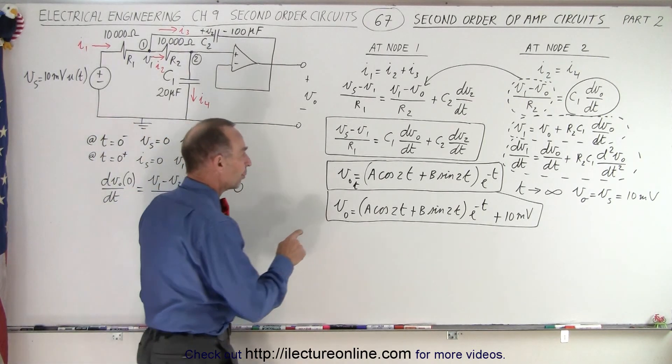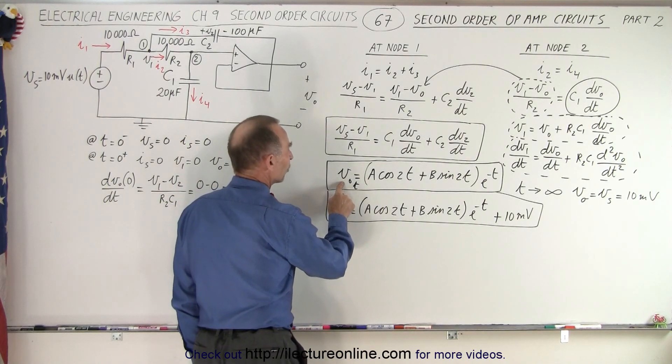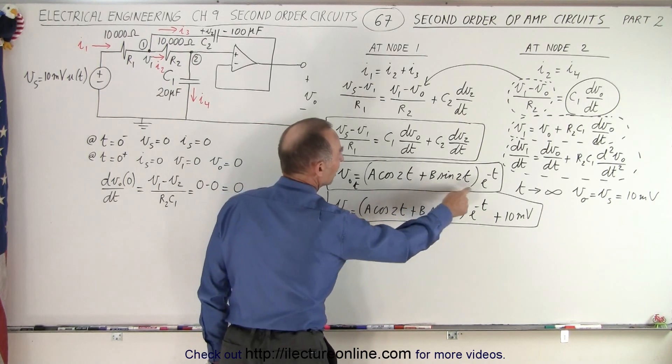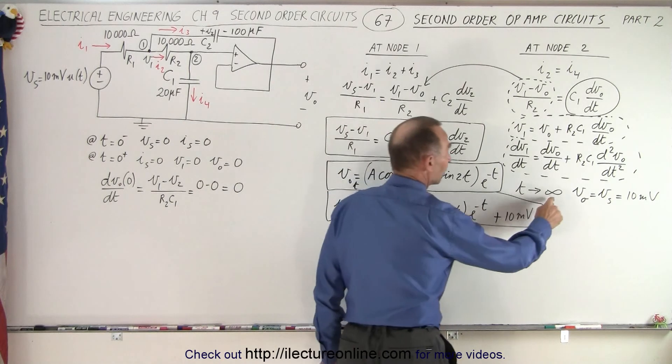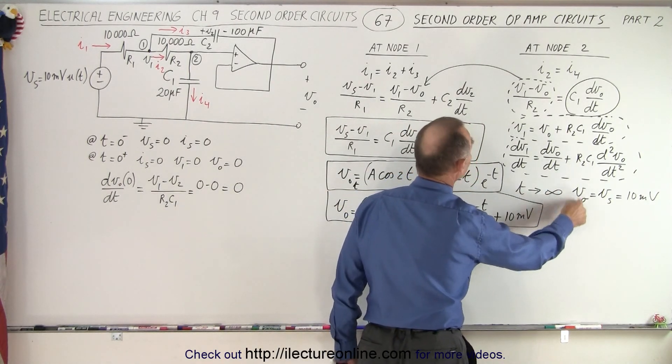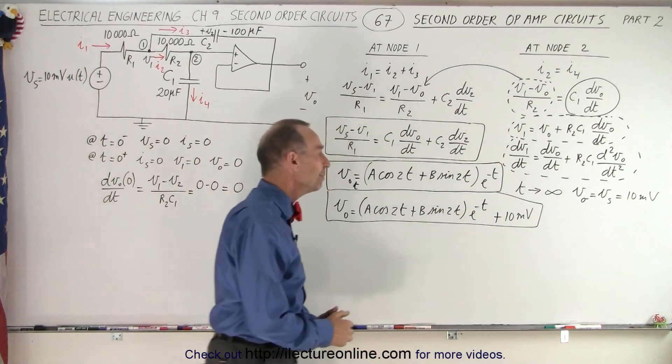We ended up getting to the point where we had the transient equation of the output voltage in terms of A cosine 2t plus B sine of 2t e to the minus t. Now, realizing of course that when time goes to a very long period, when a lot of time has gone by, we know that the output voltage will be equal to the source voltage, will be equal to 10 millivolts.